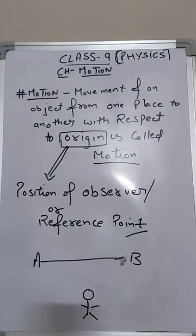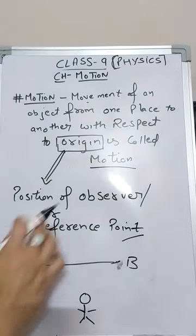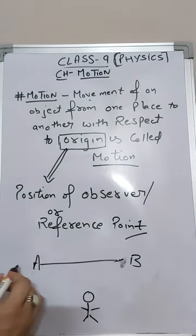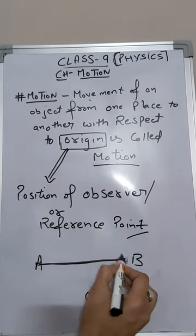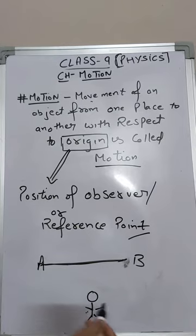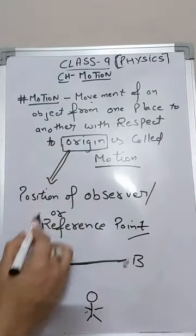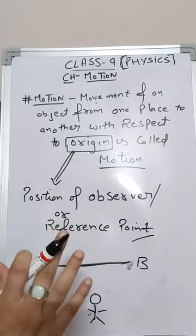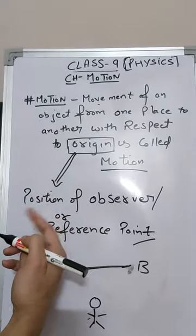Motion means the movement of an object from one place to another with respect to its origin. Here, origin refers to the position of the observer or any reference point. For example, the marker is moving from point A to point B, so the marker is in motion. You, as the observer watching this video, are at a particular point which we consider as the origin or reference point.